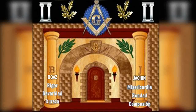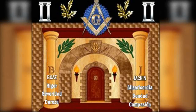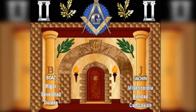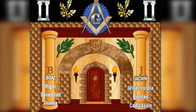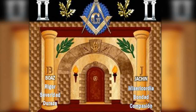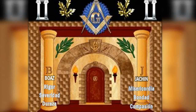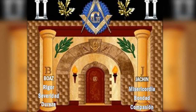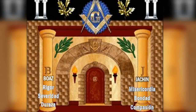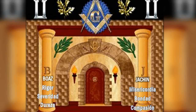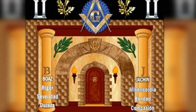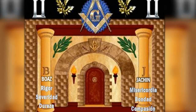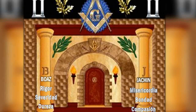Y en esta columna del lado derecho, que dice que el que venciere lo haré columna del templo de mi Padre, se subirá por la derecha, porque este es el lado de la misericordia, de la bondad, de la compasión. El lado izquierdo es del rigor.